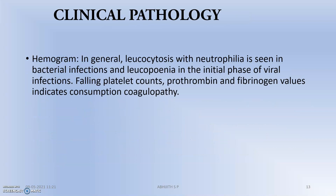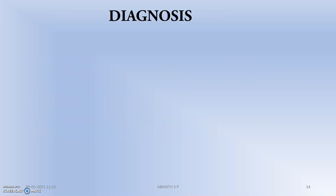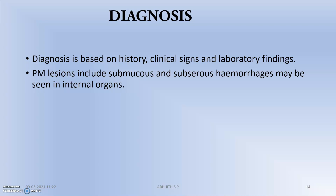Moving to clinical pathology: a hemogram — complete blood count — is performed, and leukopenia or leukocytosis may be seen. Platelet counts, prothrombin, and fibrinogen values indicate consumption coagulopathy. Blood culture is done to identify which organism produced the condition. Examination of other body fluids such as ascitic fluid and synovial fluid may also be required. Diagnosis is based on history, clinical signs, and laboratory findings. Post-mortem lesions include submucosal and sub-serosal hemorrhages that may be seen in internal organs.